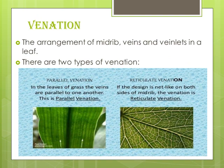Now we will come to venation. What is venation? The arrangement of the midrib, veins and veinlets in a leaf is known as venation. The mode of arrangement of the midrib, veins and veinlets in a leaf is known as the venation of the leaf. There are two types of venation: parallel venation and reticulate venation.